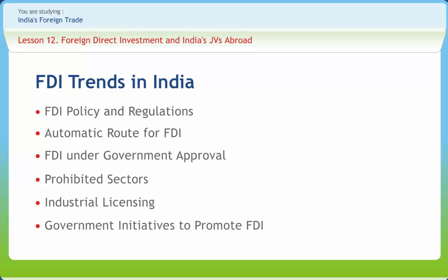In 1991, under the leadership of then Finance Minister Manmohan Singh, the Indian government issued the Industrial Policy of 1991 that greatly liberalized the country's economy. In August 2009, the Indian government announced it would not be changing the limit on FDI in the banking and media sectors. Indian law only allows 74 percent FDI in private banks and 20 percent in state-run banks.